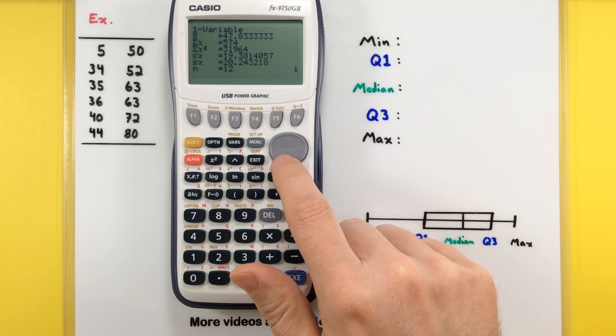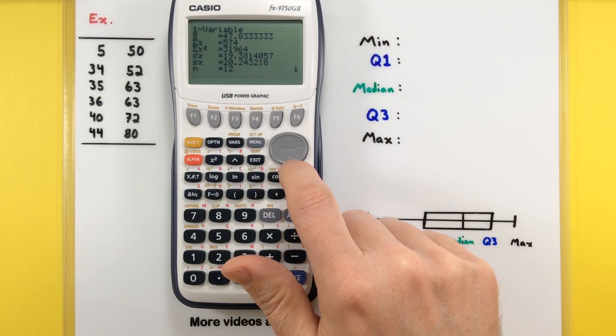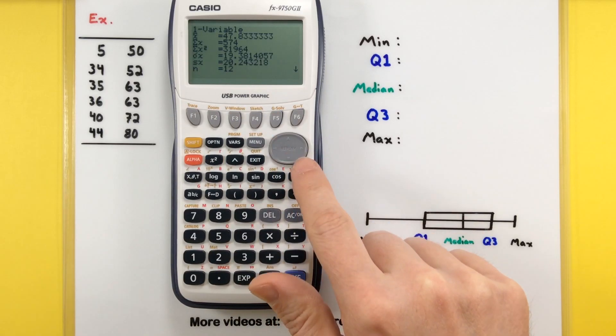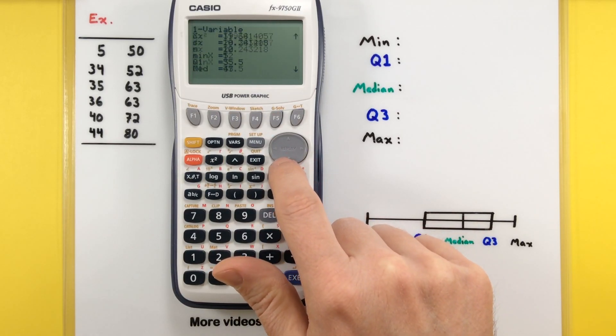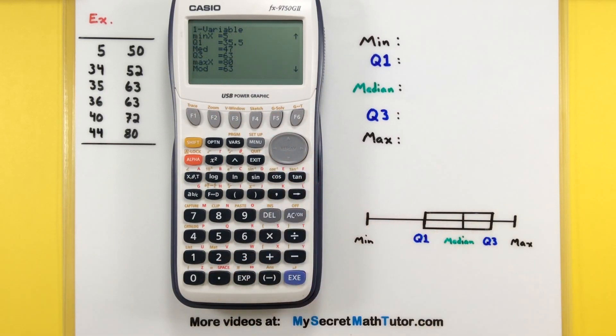And now we've got tons of information on this little data set. Stuff like the mean, the standard deviation, even something like the sum of all the values. But what we want is a little bit further on down, so let's scroll on down.